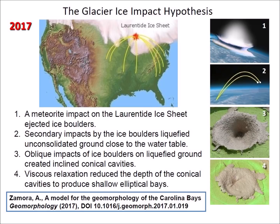The paper described four mechanisms that explained the formation of the Carolina Bays. First, a meteorite impact on the Laurentide Ice Sheet ejected ice boulders. The secondary impacts by the ice boulders liquefied consolidated ground close to the water table. Oblique impacts of ice boulders on liquefied ground created inclined conical cavities. And finally, viscous relaxation reduced the depth of the conical cavities to produce shallow elliptical bays.